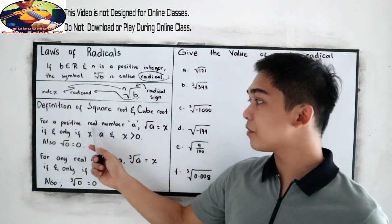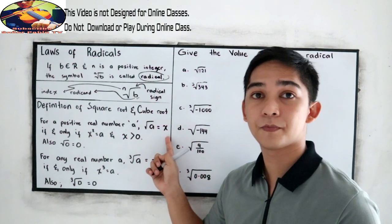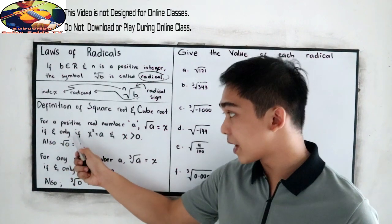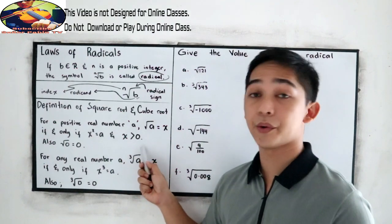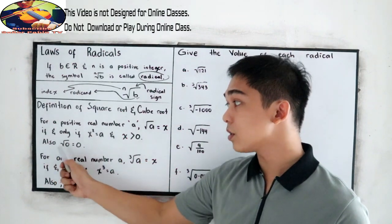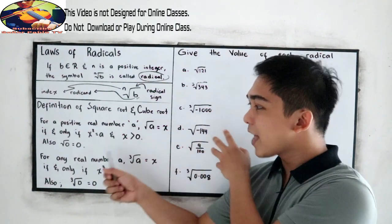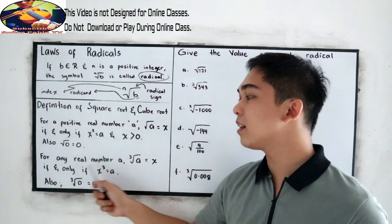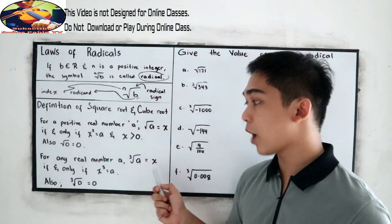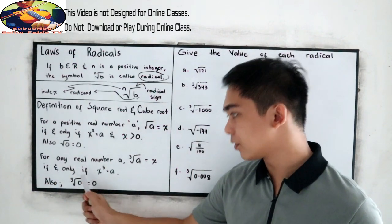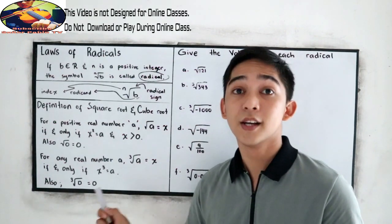For a positive real number A, square root of A is equal to X if and only if X squared is equal to A, and X is greater than 0. Also, square root of 0 is equal to 0. For any real number A, cube root of A is equal to X if and only if X cubed is equal to A. Also, cube root of 0 is equal to 0.